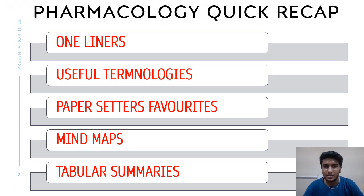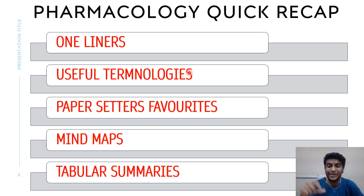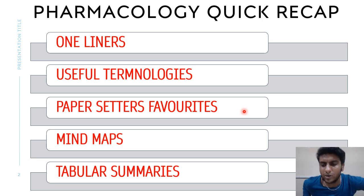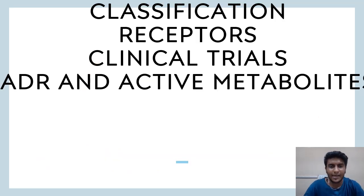When we talk about pharmacology, we will be learning certain one-liners and useful terminologies like agonist, antagonist, partial agonist, and inverse agonist. Buspirone is an example of a partial agonist; bicuculline is an example of a competitive antagonist at the GABA receptor; beta-carboline is an example of an inverse agonist. There are certain paper-setter favorites — topics from which questions definitely come — and we'll cover mind maps, classifications, and summarized tabulated forms.